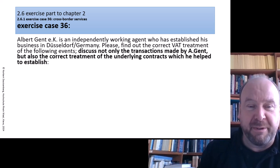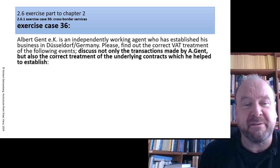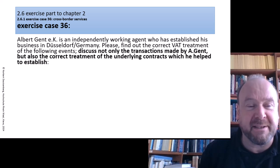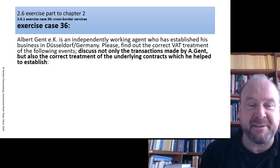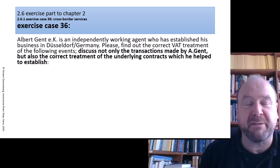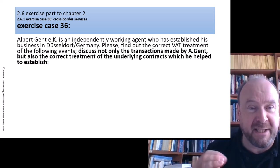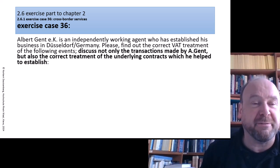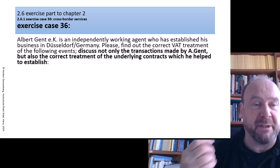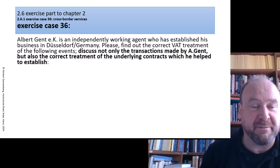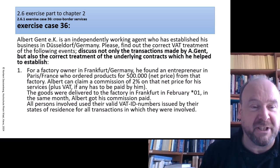Your task is to find out the correct VAT treatment of the following events. Explicitly, the task is to discuss not only the transactions made by Albert Ghent himself, but also the correct treatment of all the underlying contracts which he helps to establish, as a good opportunity to repeat our basic knowledge from previous chapters.